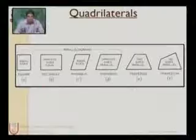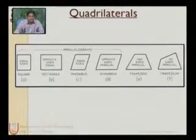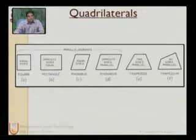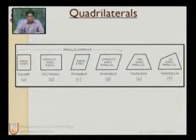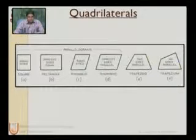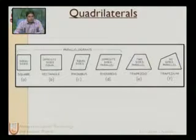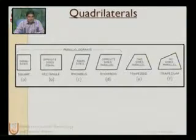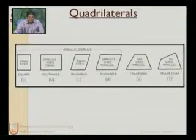In the next slide we can see various examples of quadrilaterals. The first one is a square, which has all sides and all angles equal. In a square, all sides have the same length.